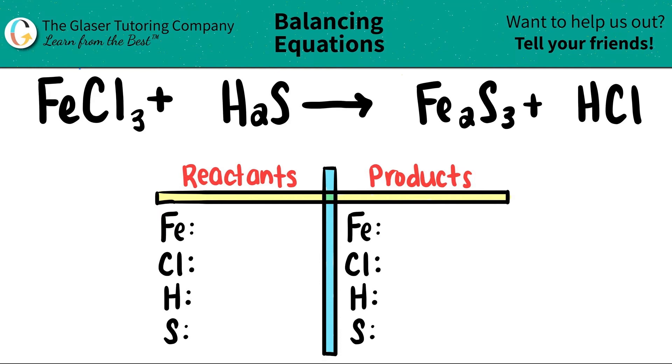Today we're going to balance the equation FeCl3 plus H2S. When they come together it will yield Fe2S3 plus HCl. I already wrote out our little balancing chart here as well as the elements that I see that are on both the left and the right sides.